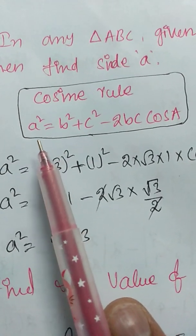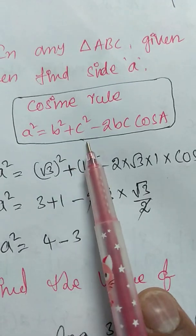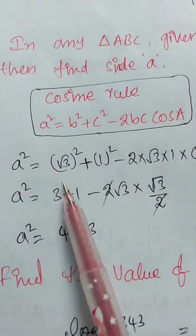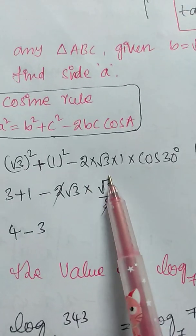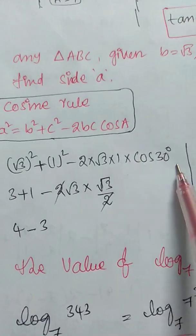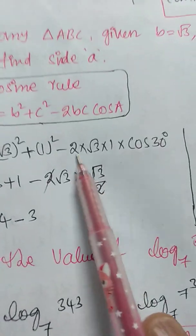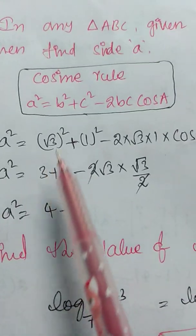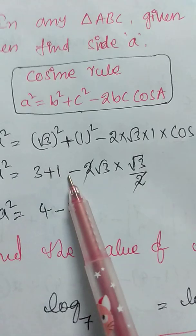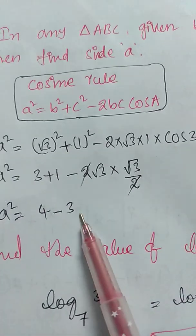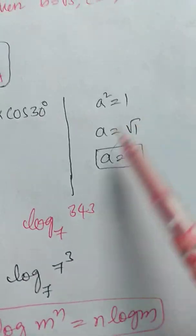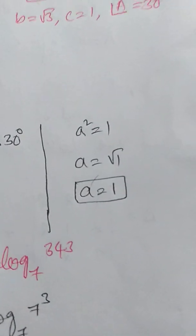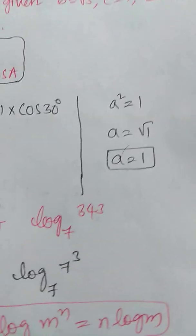The cosine rule is: a squared equals b squared plus c squared minus 2bc cos A. Substituting: a squared equals (root 3) squared plus 1 squared minus 2 into root 3 into 1 into cos 30 degrees. Cos 30 degrees equals root 3 by 2. So: 3 plus 1 minus 2 into root 3 into root 3 by 2 = 4 minus 3 = 1. Therefore a squared equals 1, and a equals 1.